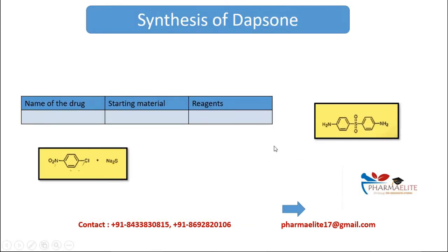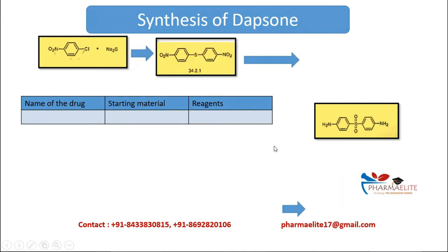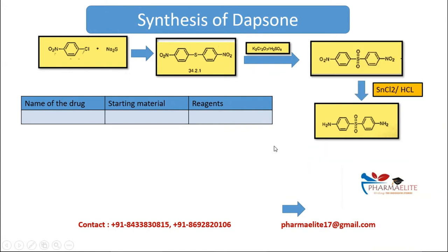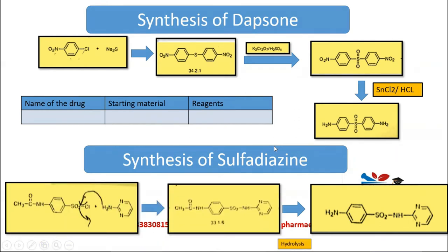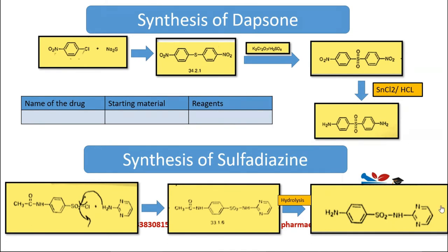For synthesis, I'm taking the example of dapsone — this applies to all drugs in medicinal and organic chemistry. In semester exams you write the full reaction mechanism step by step — reactants, intermediates, transition states, final product — because you get 10 marks. But in entrance exams, nobody asks for the mechanism. What you need to know is a table: name of the drug, starting material, and reagents used (only if very specific). Study synthesis in tabular format for entrance exams.